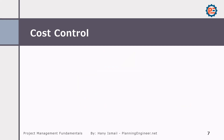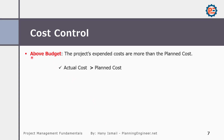In cost control, just as we say we are ahead of schedule or behind schedule, we have similar terms for cost. We can say we are above budget, meaning the project's expected costs are more than the planned cost — the actual cost is more than the planned cost. This is something bad; don't let the word 'above' mislead you.